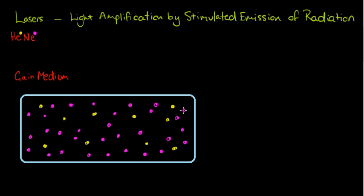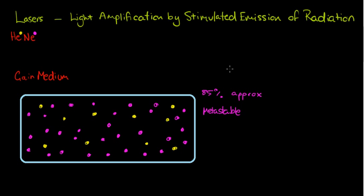Approximately 85% neon gas and 15% helium gas. The helium is in there for a reason and the neon is in there for a reason. The neon has something called a metastable state, which is a relatively long-lived excited state. I'll talk a little bit more about metastable states later — but a metastable state is a long-time excited state.